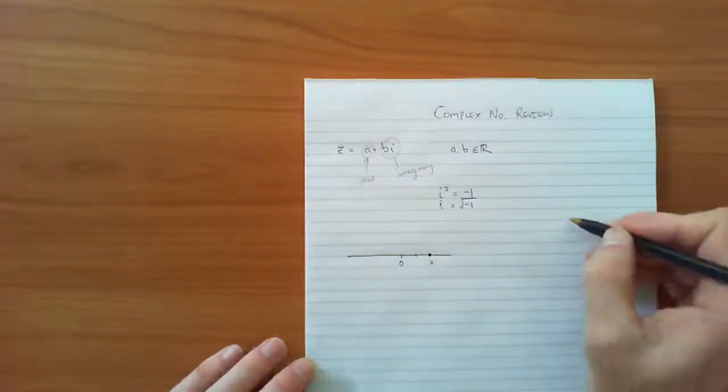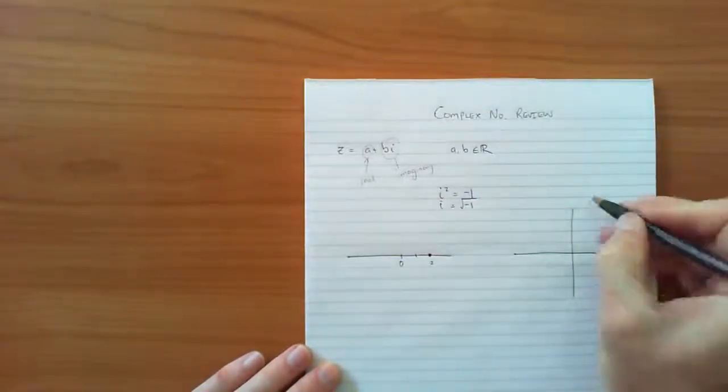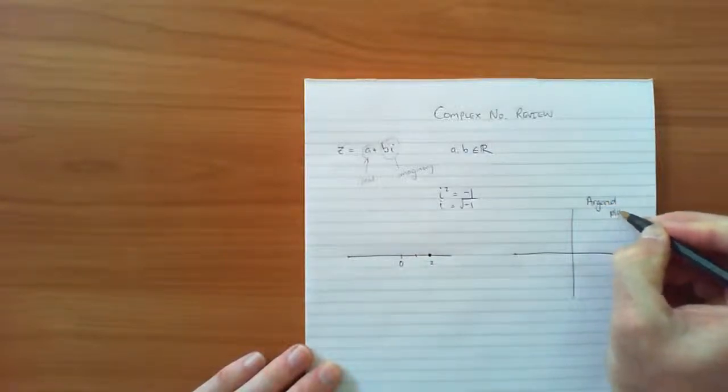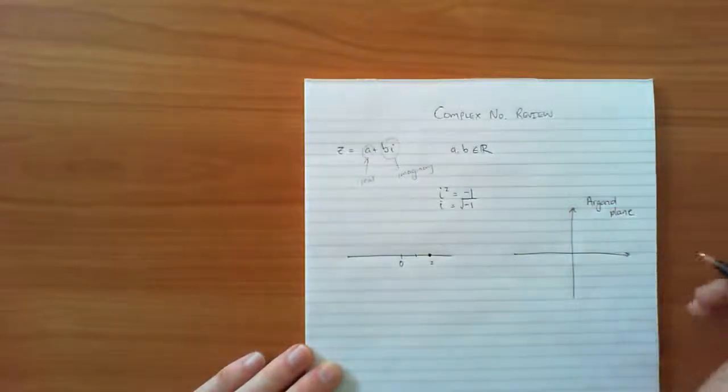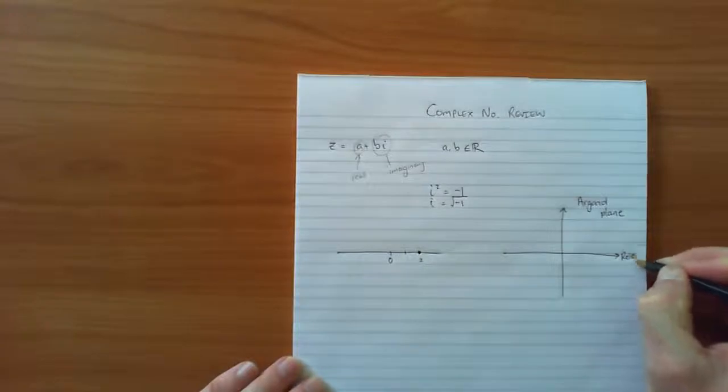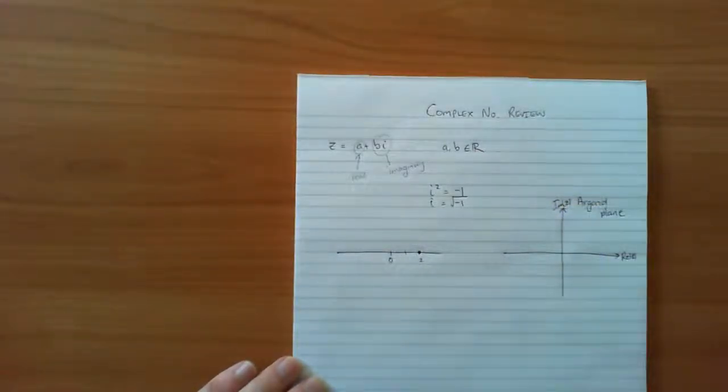However, for a complex number we graph a complex number on what we call the argand plane. Now the argand plane is similar to the Cartesian plane except our two axes, this is what we call real Z or our real axis, and the vertical one is our imaginary axis.